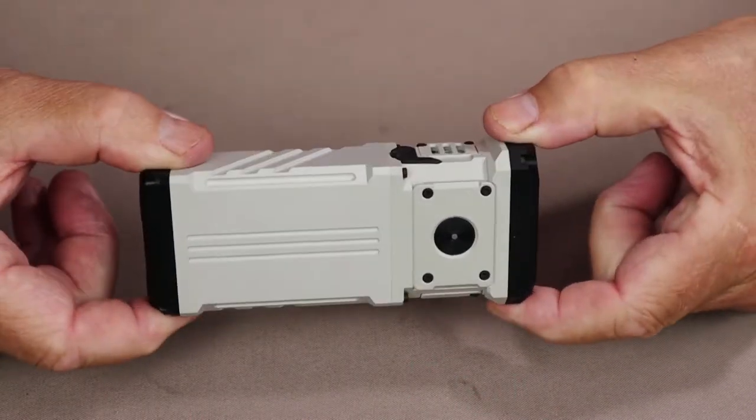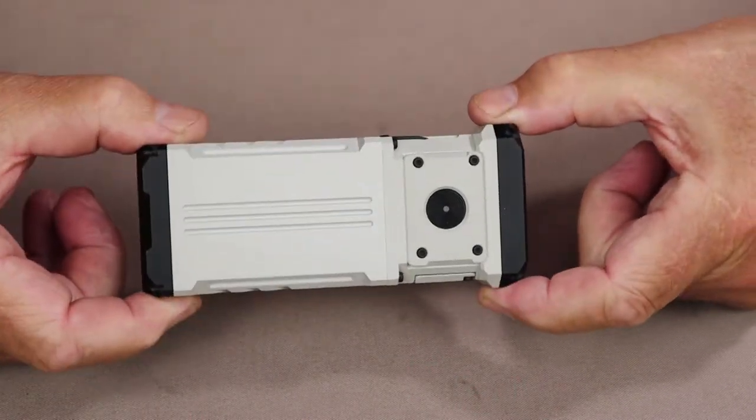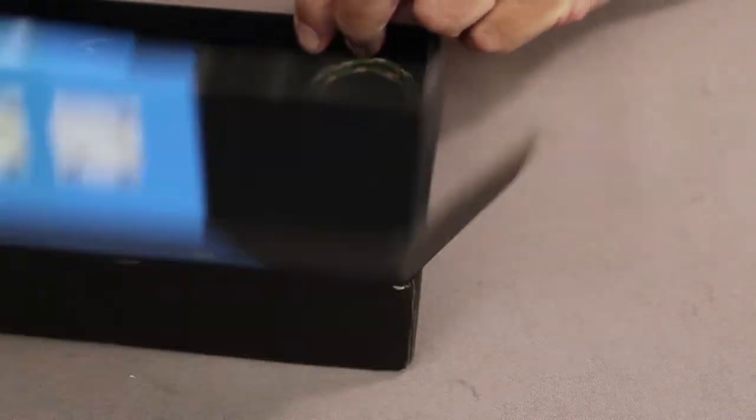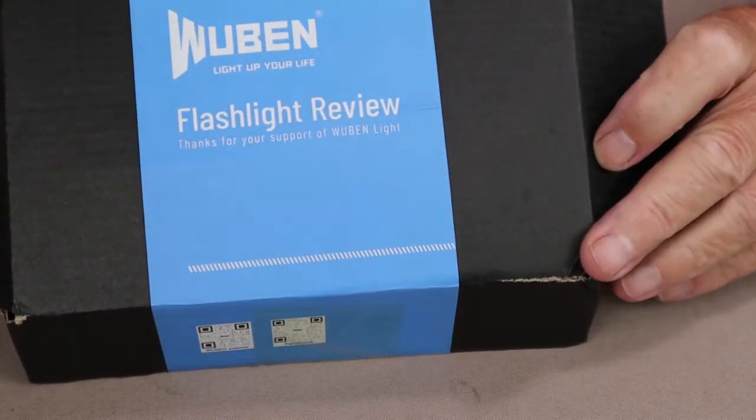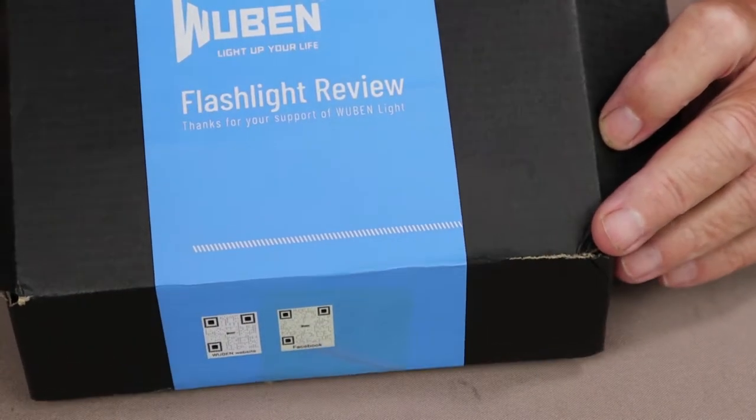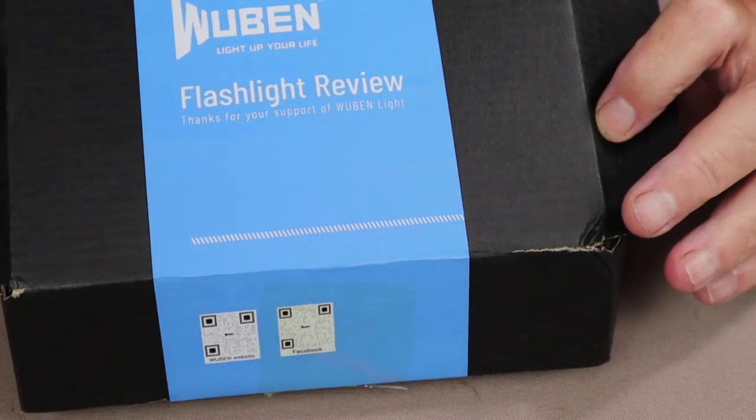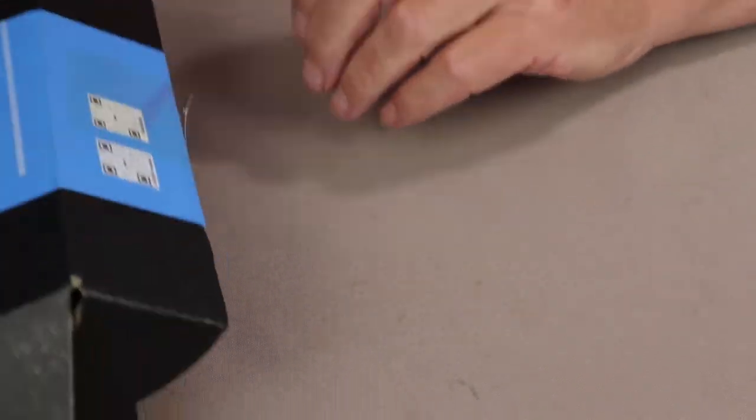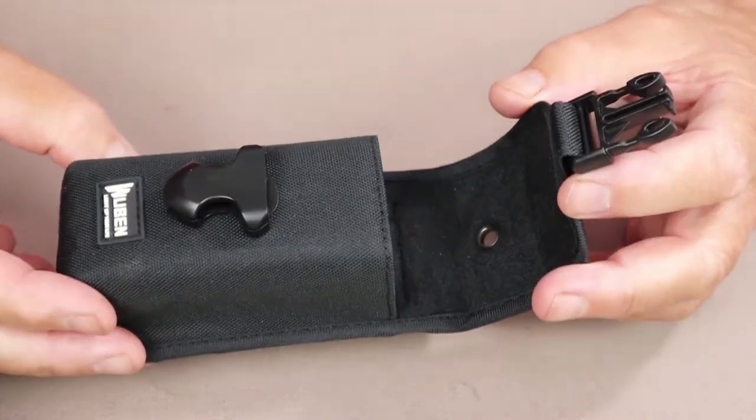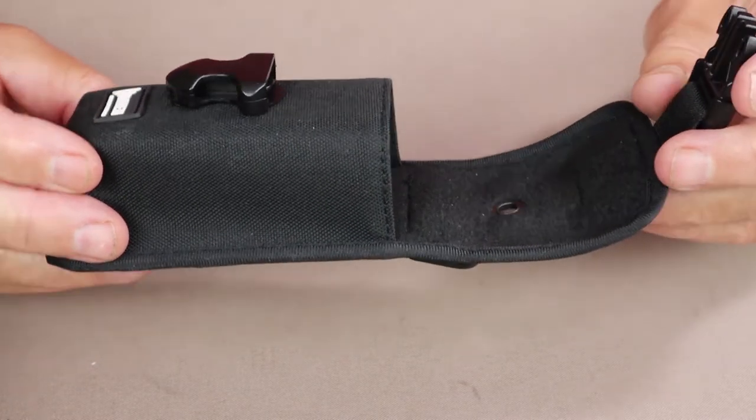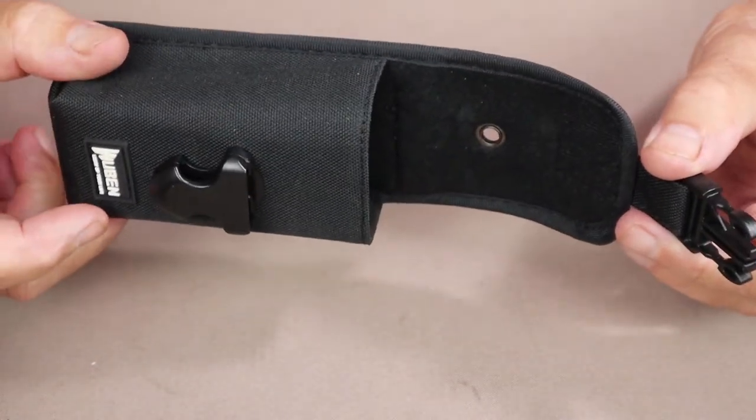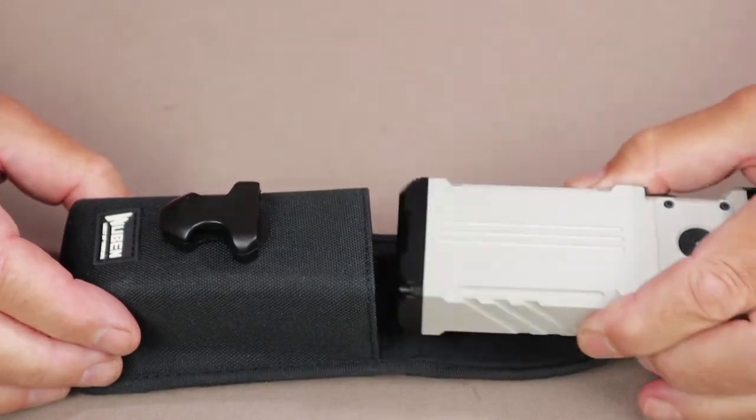Before we take a closer look at the Wubin X1 flashlight, I thought I'd share with you what came with it. Everything arrived in this box. This is a pre-production sent out to flashlight reviewers like myself, but the contents will be the same. The first thing I want to show you is this holster that it came with.